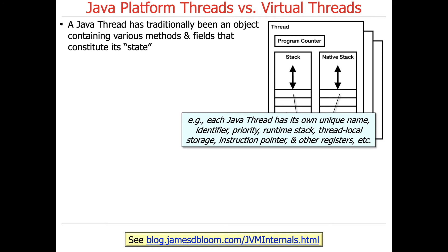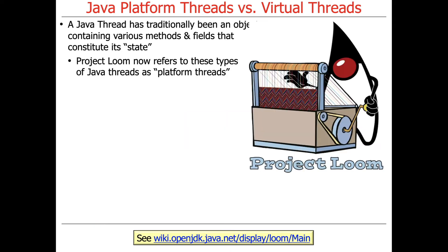Just a quick recap: a Java thread historically has been an object that contains various methods and fields that constitute its state. We talked about things like unique name, identifier, unique priority, unique runtime stack, unique thread local storage, unique instruction pointers, and other registers. Project Loom refers to these types of Java threads as so-called platform threads because they have their own stack associated with them.